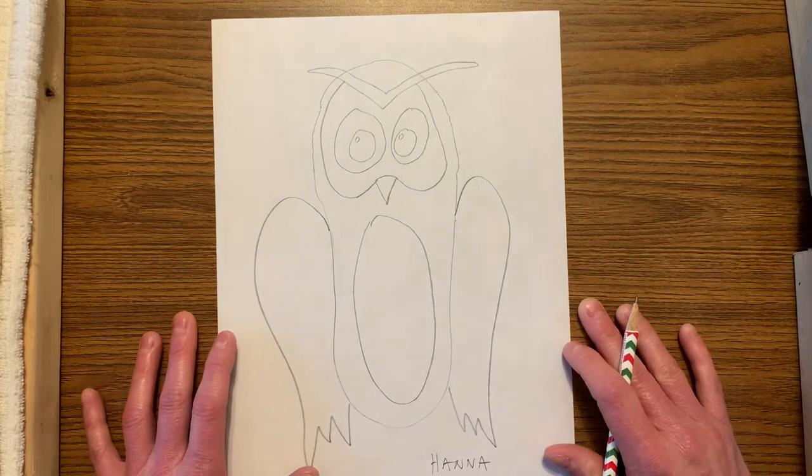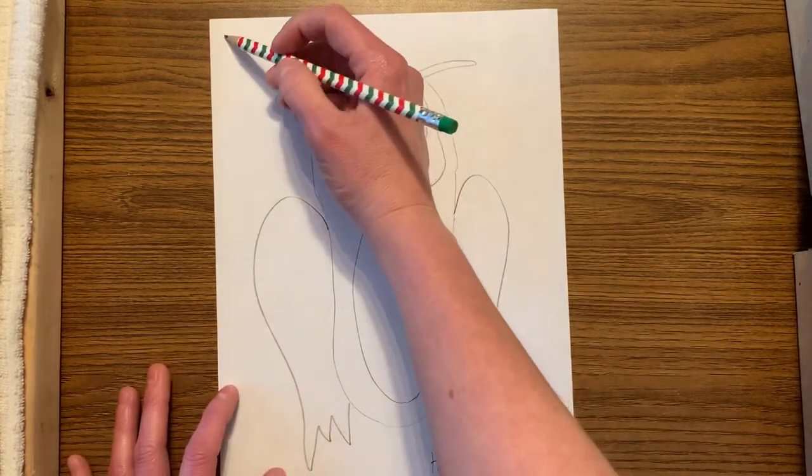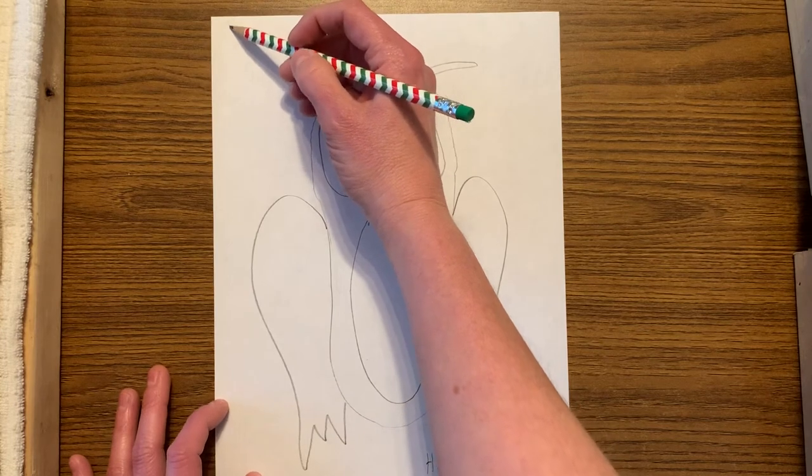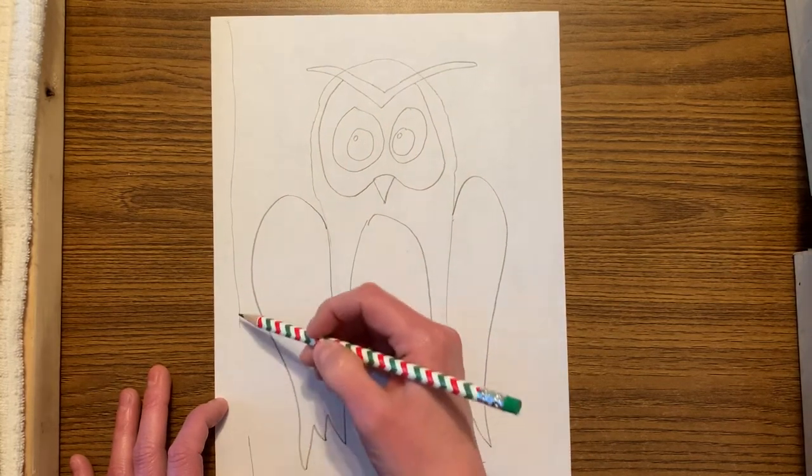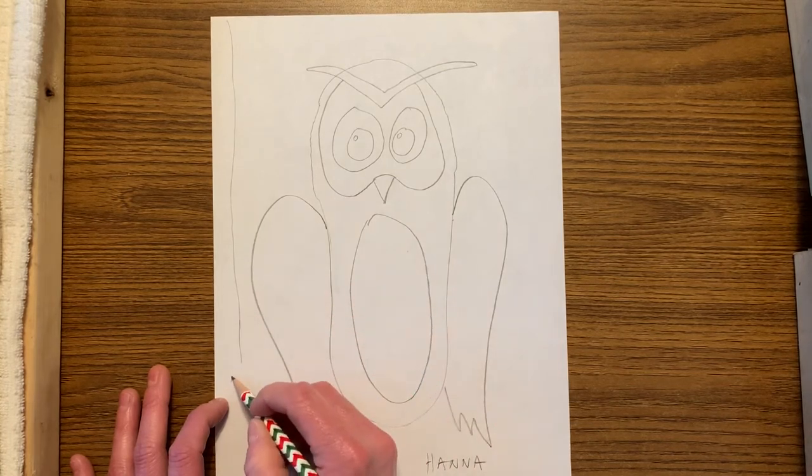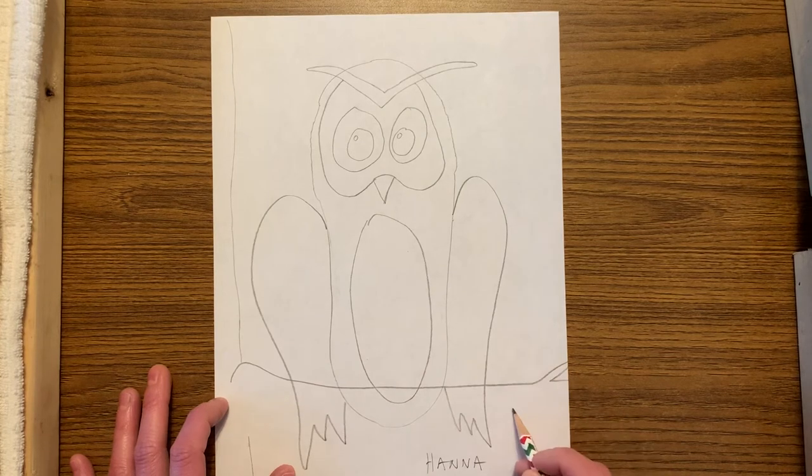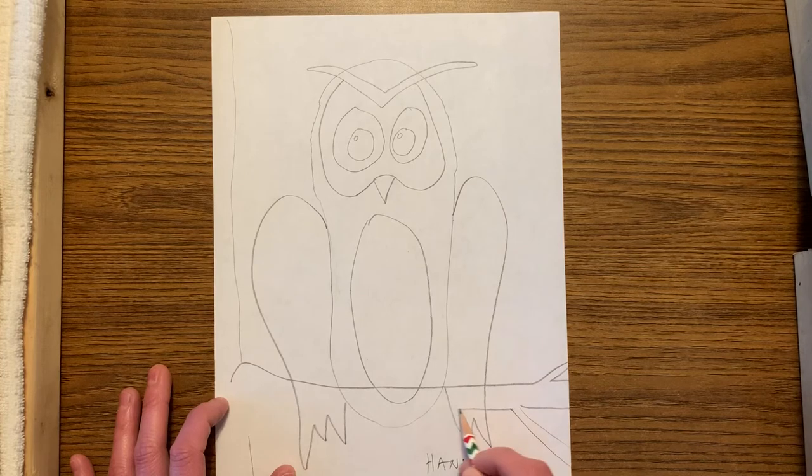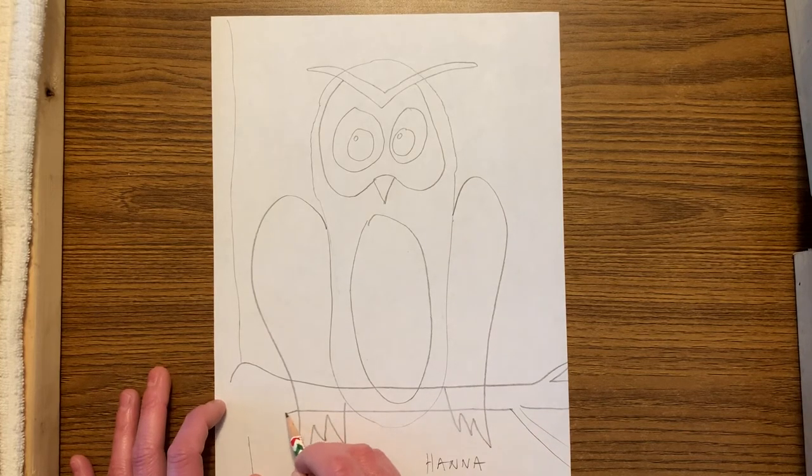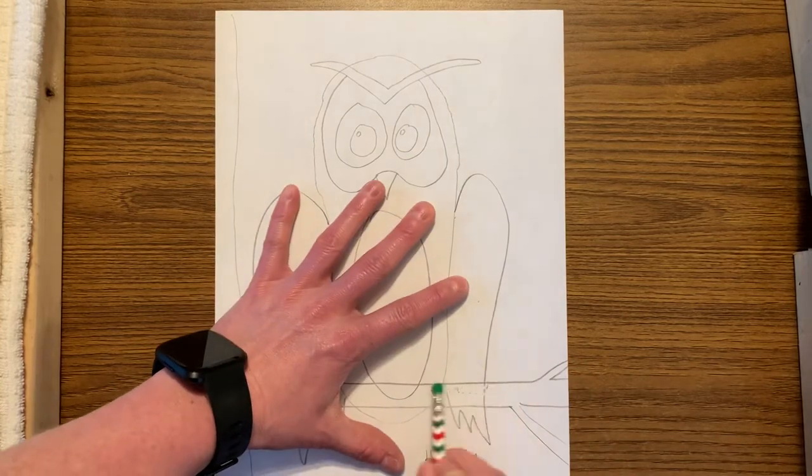And then I started to think about, well, where do owls sit at? What do they do? And they usually are up in trees, and they usually only come out at night. They're pretty cool to hear, though, unless you have a screech owl. We have some around my house, and it's always interesting to hear them. I'm going to put a branch here for him to perch on. And I can erase out some of this here.